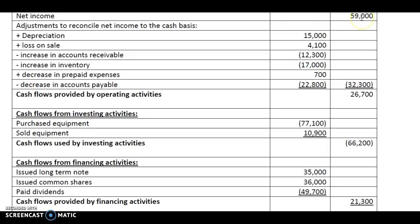The net income of 59,000 minus 32,300 gives us 26,700. Since this is a positive figure, this is called cash flows provided by operating activities. The next heading is cash flow from investing activities.